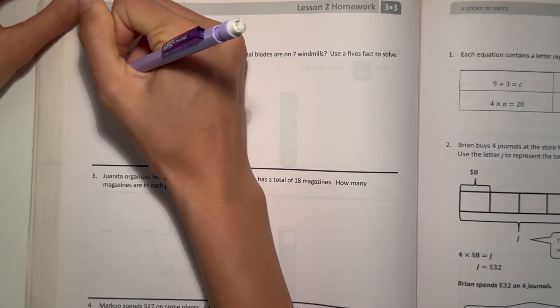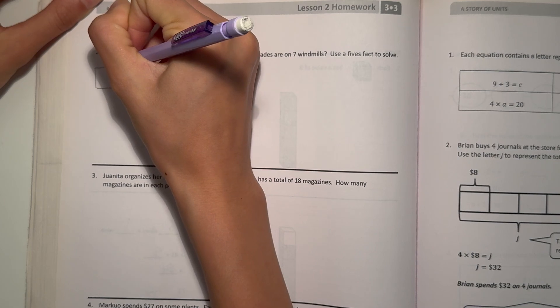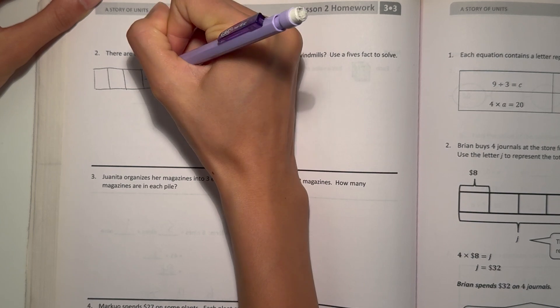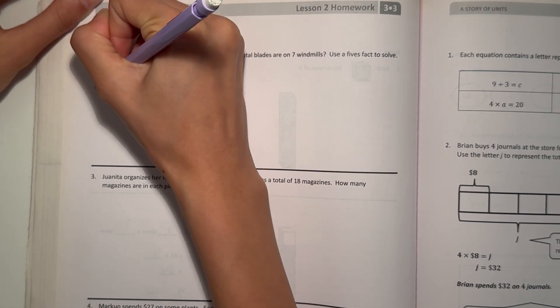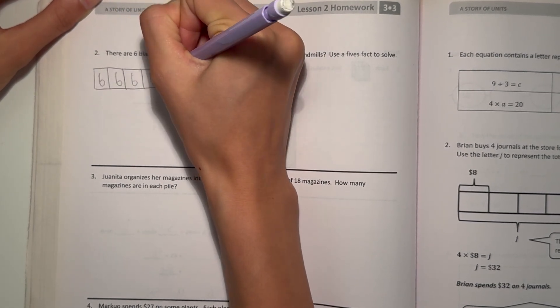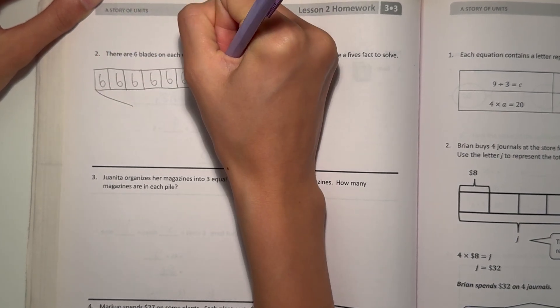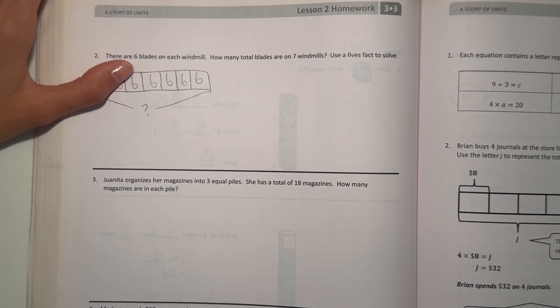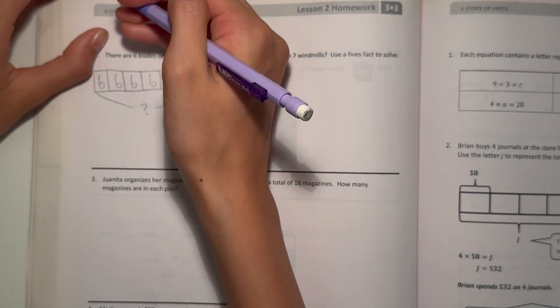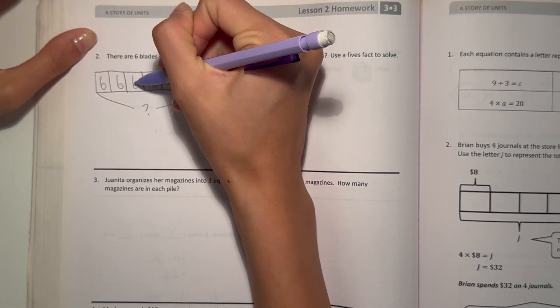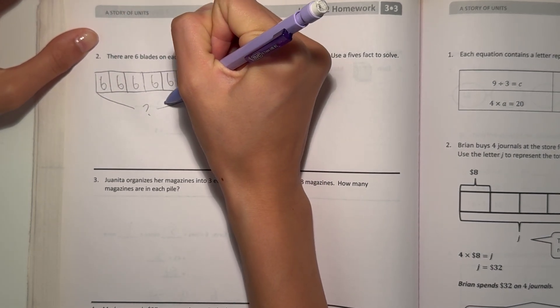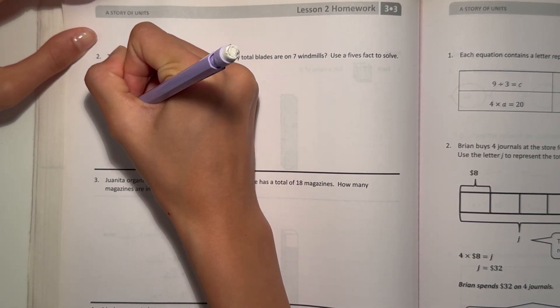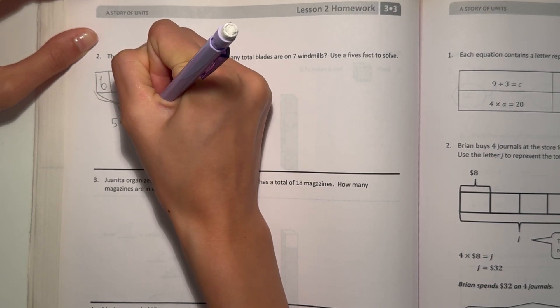Alright, so let's do a tape diagram. We have 7 windmills. 1, 2, 3, 4, 5, 6, 7. And each are worth 6. So we want to find out how many are on 7 windmills. How many are there all together? So we can use 5 facts. 1, 2, 3, 4, 5. So we take the 5 and we isolate it. So we have 5 sixes, which is 5 times 6, and that is 30.